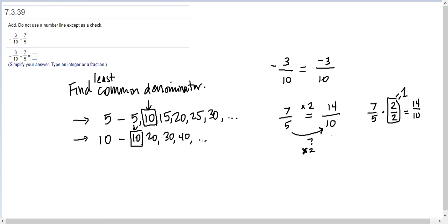So we haven't changed the underlying value of 7/5. Now we have -3/10 plus 14/10. We know our final answer will have denominator 10. Now we just take the numerators and add them.